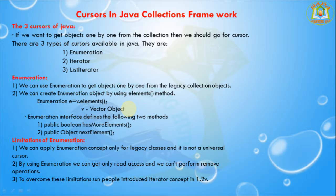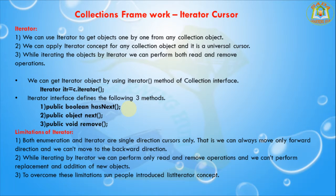In Java 1.2 version onwards, to overcome the limitations of Enumeration, a new cursor called Iterator was introduced. We can use Iterator to get objects one by one from any collection objects. We can apply the Iterator concept for any collection objects — it is a universal cursor. We can use it in legacy collections or in latest collections.